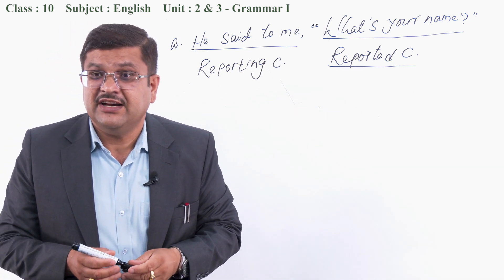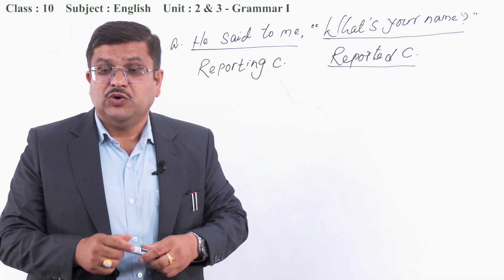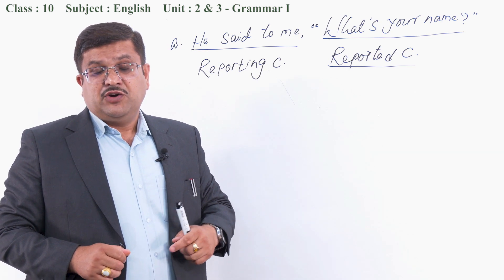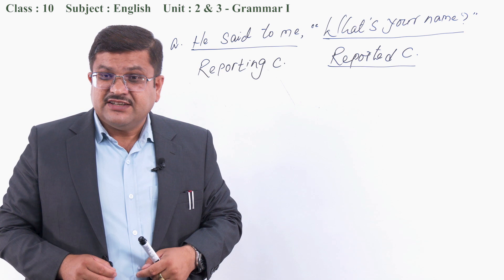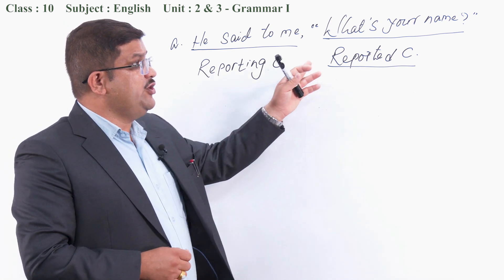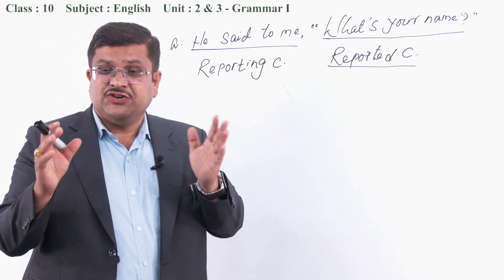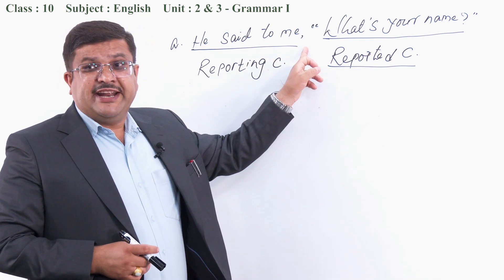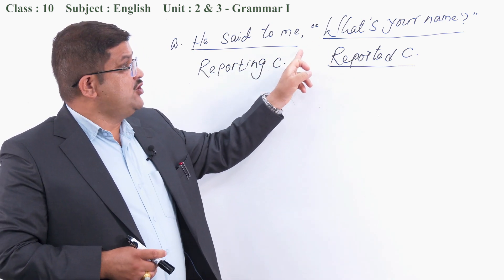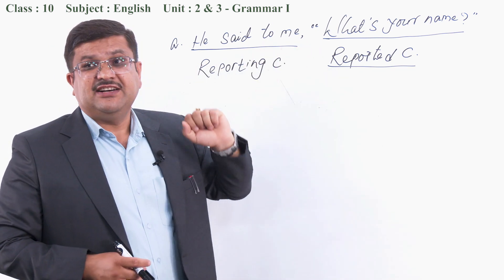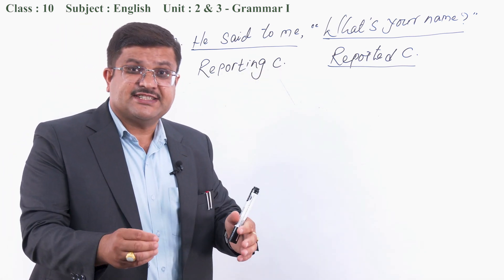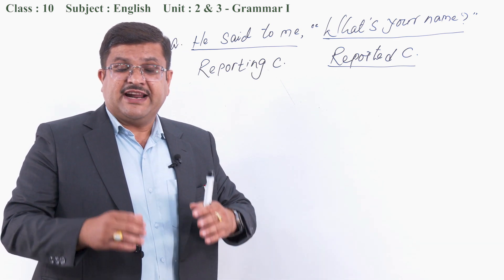When there is no inverted comma, the sentence is known as indirect speech. There are no connectives joining the two clauses, that is why it is a direct statement. How can we change the direct statement into indirect one? There are some certain rules.